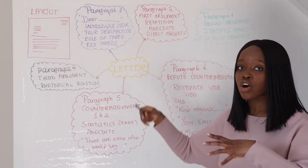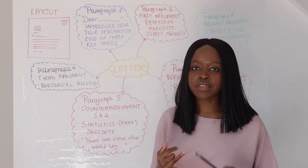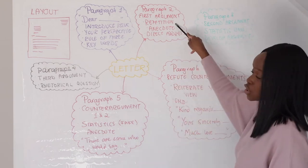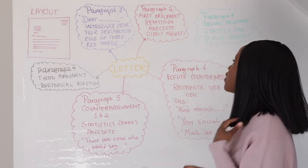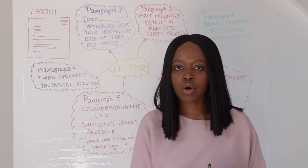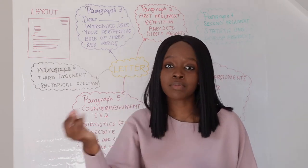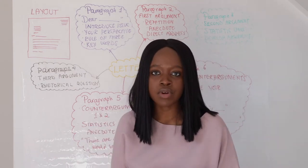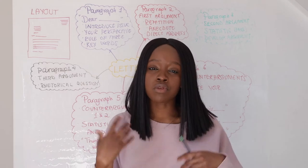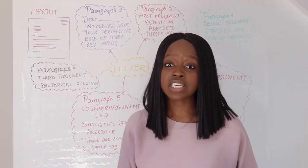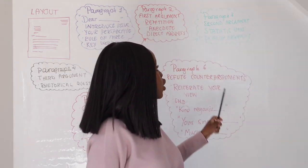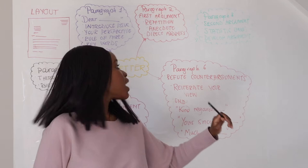In your second paragraph, go into your first argument in depth — talk about why you believe this is an issue and develop that argument in detail. I would suggest using repetition as a persuasive device and also giving an anecdote, meaning a relatable example of an individual who has been impacted by the issue. Also, always remember you are using direct address — talking directly to the MP or recipient.